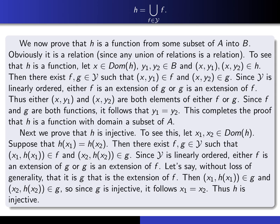Let's prove H is a function from some subset of A into B. H is clearly a relation, being a union of relations — just a subset of A cross B. To see it's a function, we give ourselves an element of its domain and assume x, y1 and x, y2 both lie in H, then show y1 equals y2. To say x, y1 lies in H means there exists F in Y such that x, y1 is an element of F.